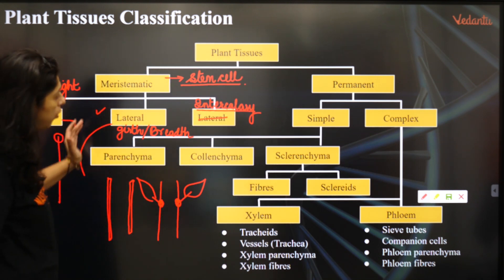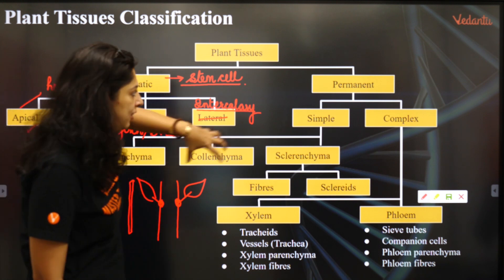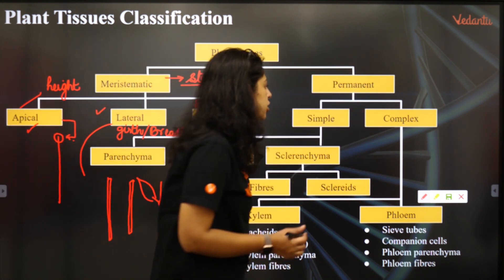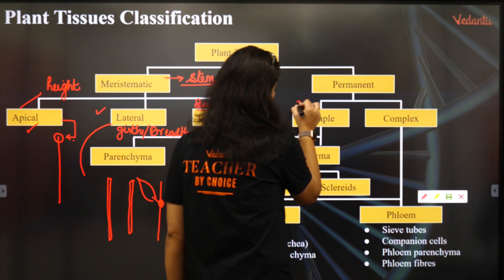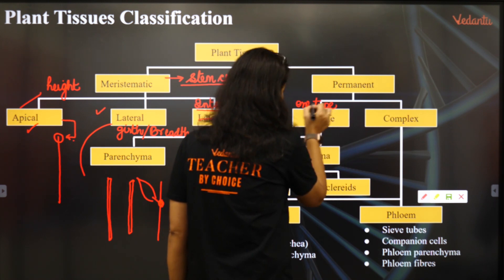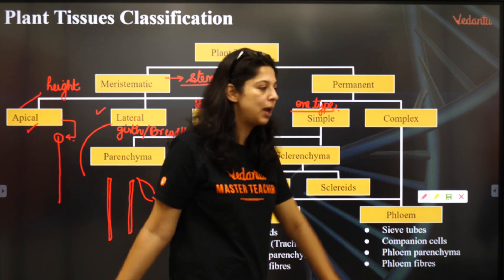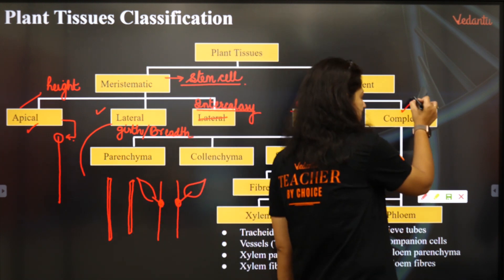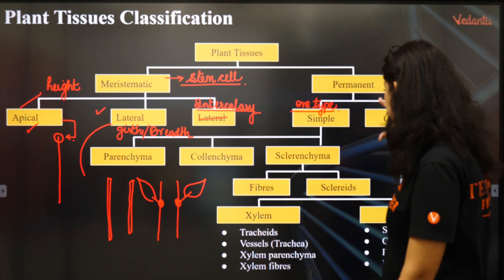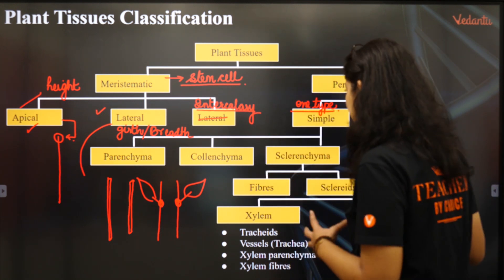Is that clear? These are the meristematic tissues — they can go ahead and form anything. Finally, we come to the permanent tissue. Permanent tissue, if it is one type of tissue, is called simple tissue. If it is an aggregate of many types of tissues, it's called complex tissue. So if it's made up of a single type, we call it simple; if it's made up of an aggregate, we call it complex.